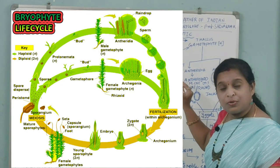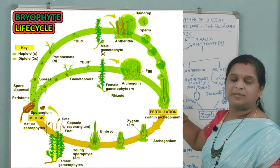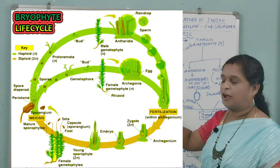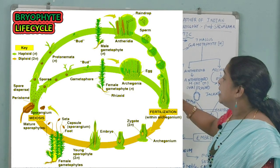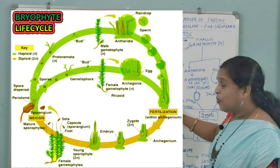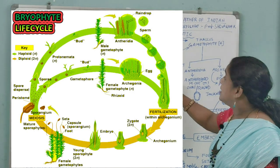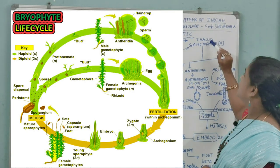In liverworts and hornworts, which also belong to Bryophyta, the spores after germination directly form a gametophytic thallus-like structure, unlike mosses which go through the protonema stage.